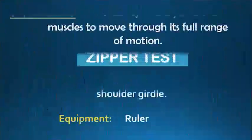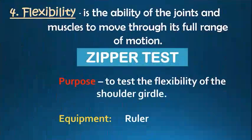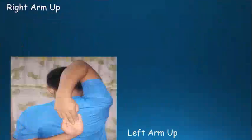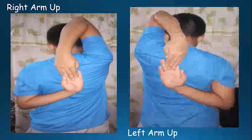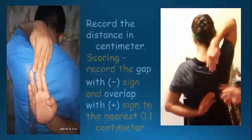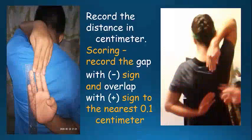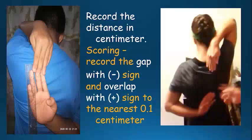For flexibility, to measure this component, you need to do the zipper test. Measure the distance of the overlapped fingertips for the right arm up and for the left arm up. For overlapped fingertips, indicate a plus sign on the score. If you fail to reach and there is a gap between the fingertips, measure the gap and indicate a minus sign on the score.